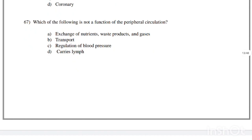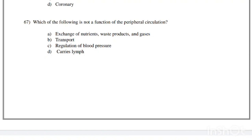Which of the following is not a function of the peripheral circulation? Exchange of nutrients, waste products and gases; transport; regulation of blood pressure; carries lymph. Correct answer is option D, carries lymph — it is not a function of peripheral circulation.